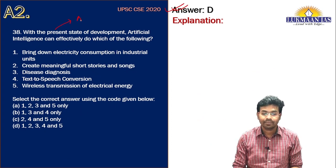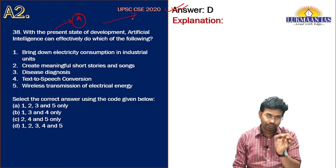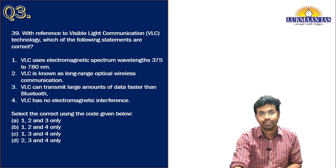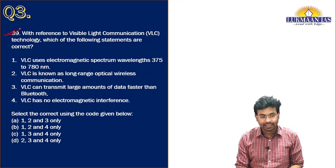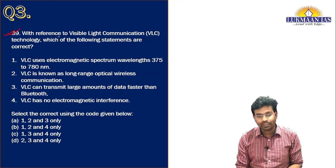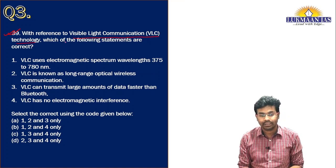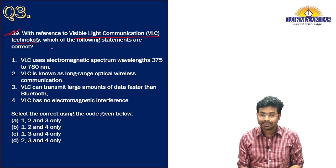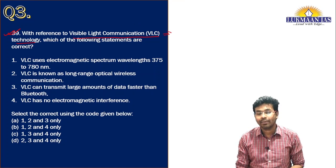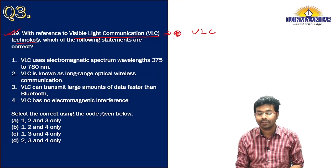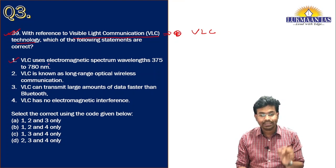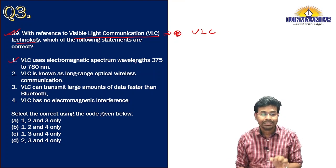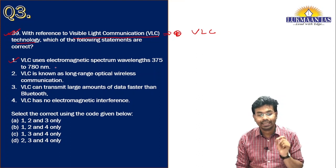All of these can be applications of artificial intelligence, so the answer is D for this question. This question was taken from Set A of the UPSC Prelims examination of 2020. Now let us take the third question, which asks: with reference to visible light communication technology, which of the following statements are correct?